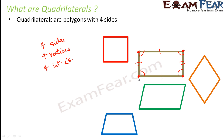What varies between quadrilaterals is the values of these parameters. In certain quadrilaterals, all the internal angles might be equal; in others, only two angles are equal; and in some, none are equal. Similarly, in some quadrilaterals the sides may be parallel, in others not; some sides are equal, others unequal. Depending on these parameters, many different types of quadrilaterals exist, and before we discuss those types, let us talk about some of the basic properties of quadrilaterals.